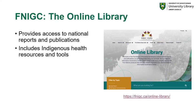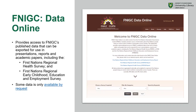The FNIGC has an online library which provides access to national reports and publications, and also includes Indigenous health resources and tools. They also have a data center online which provides access to the FNIGC's published data that can be exported for use in presentation reports and academic papers. The two primary surveys disseminated through this tool are the First Nations Regional Health Survey and the First Nations Regional Early Childhood Education and Employment Survey. Note that not all data is publicly available, and you may need to make a request to the FNIGC to receive certain data.